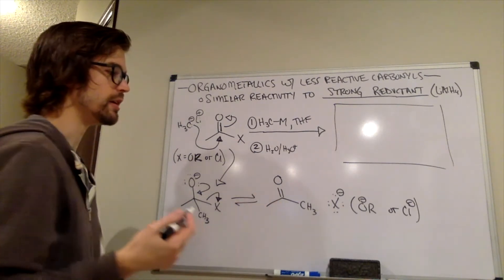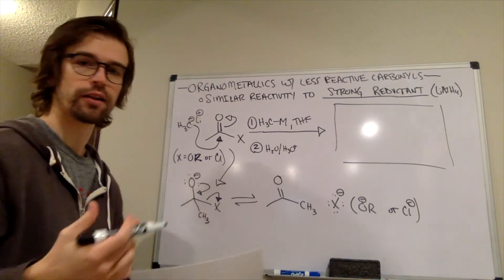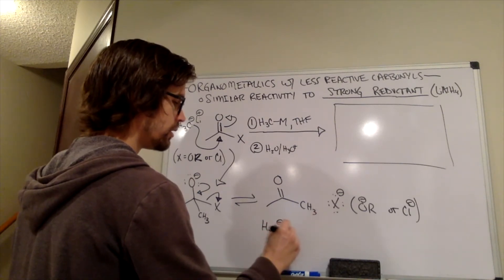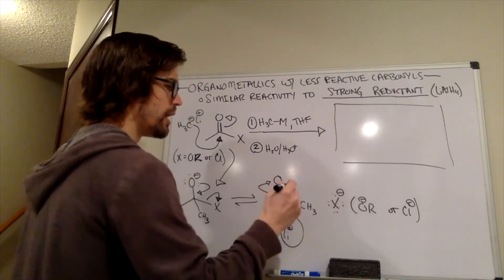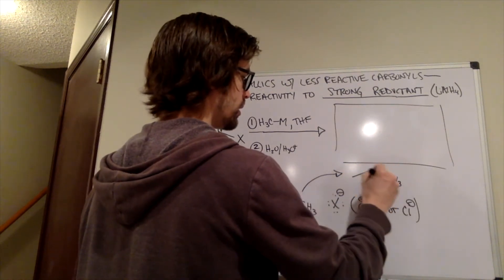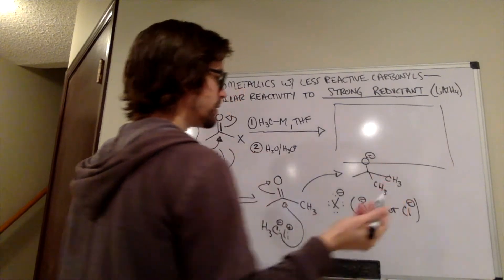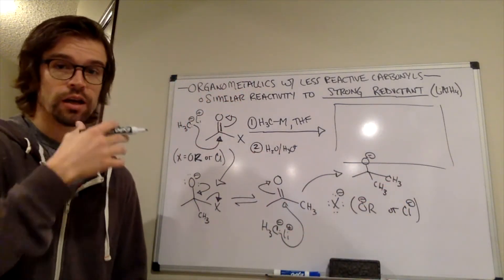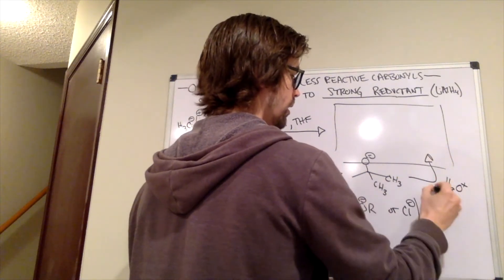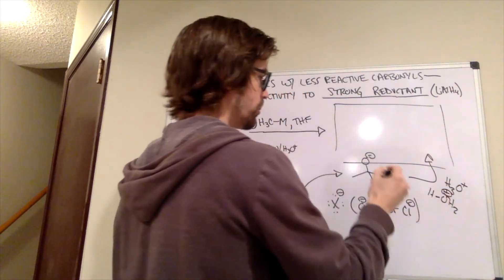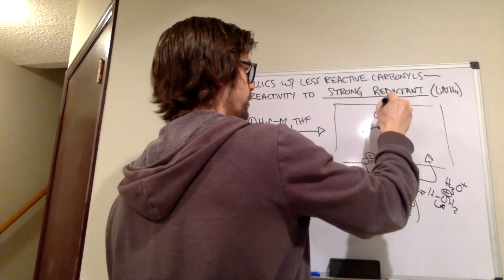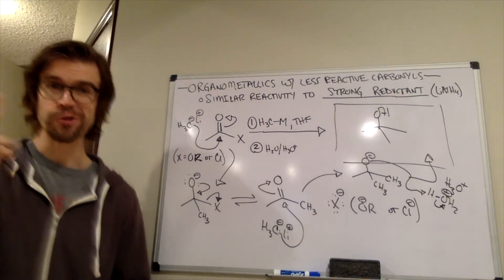So the CH3-, another equivalent of it, will then add to that ketone producing the alkoxide, the O-. And then essentially, we will add water to that. So H3O+. And it would just do a proton transfer, acid base reaction to provide us with the final alcohol product. So is this a new mechanism?